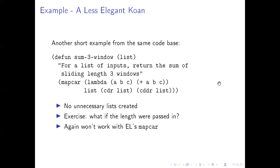Here's another example, arguably less elegant, but using the same kind of approach — a window walking through a list. We want to look at the first three elements and the next three and so on. Taking the list and the CDDR list and the CDDDR list, we look at those together, sum them, and collect results. An exercise for you: what if the window size was not fixed at three but could be passed in as an argument?